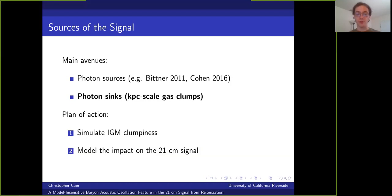An alternative avenue that hasn't been studied in detail is via the impact of the stream velocity on the small scale clumpiness of the IGM. It's believed that gas clumps on kiloparsec scales are responsible for setting the recombination rate during reionization. And these act as sinks of ionizing photons, so they're also important for the neutral hydrogen distribution. However, the formation of these clumps is known to be suppressed by the stream velocity. So there's the potential for an effect here that is worth looking at. And our goal is to quantify how important this effect is and how likely it is to leave detectable BAO features in the 21 centimeter signal.